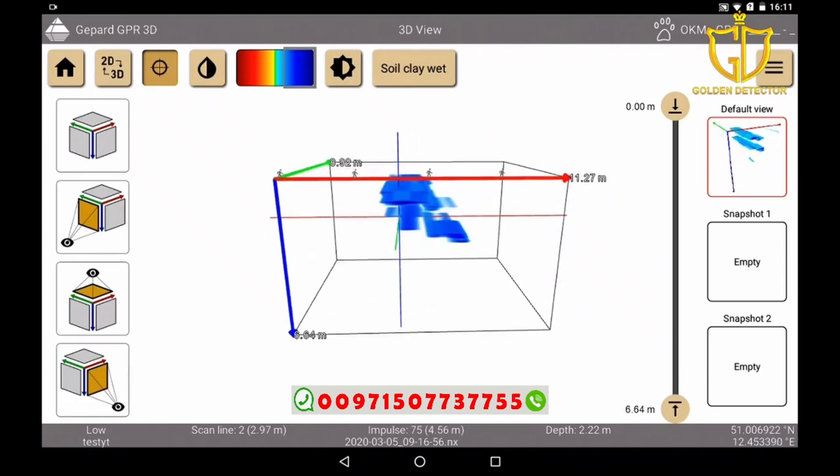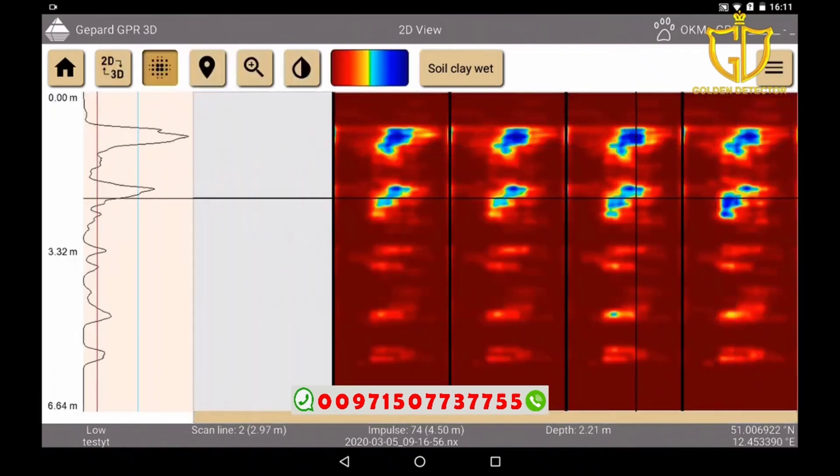We also can view our scan in the 3D view in a different color scale and in a cross section. In this view we can also move our markings, the crosshairs, from the 3D view to a new position.